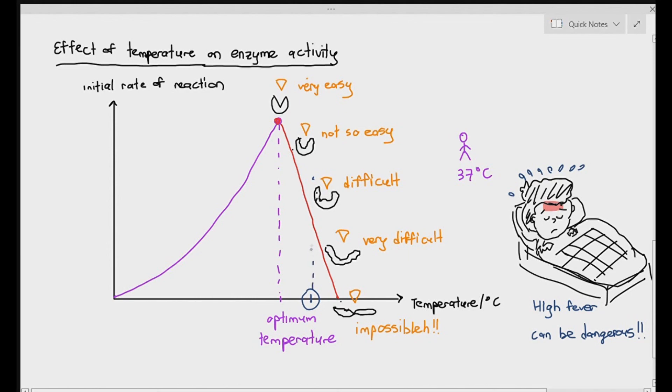It is very important to know that even beyond the optimum temperature, reactions can still happen, but the reaction will be much lower compared to the reaction at the optimum temperature. This is what we have to know about the effect of temperature on enzyme activity.